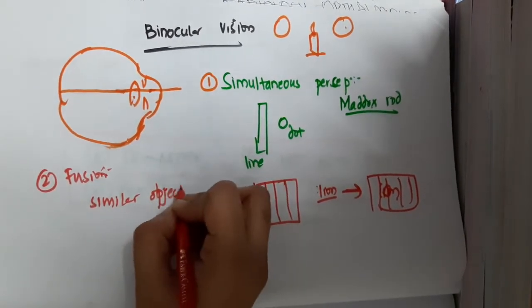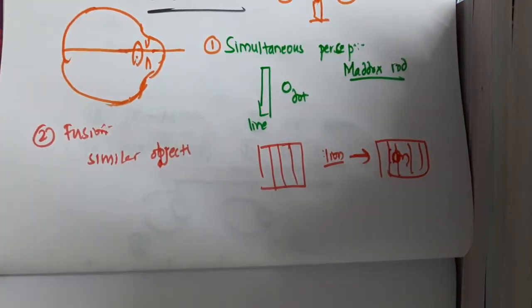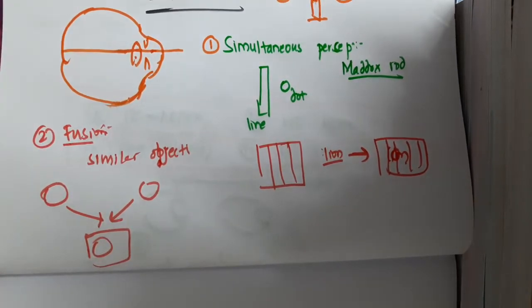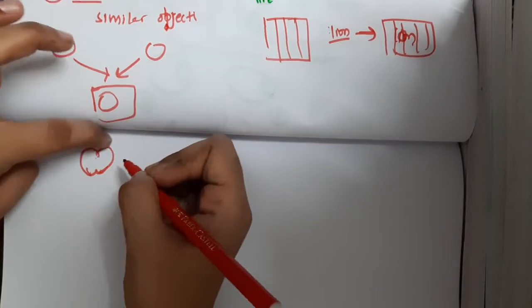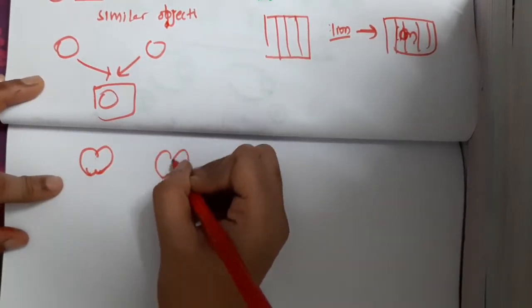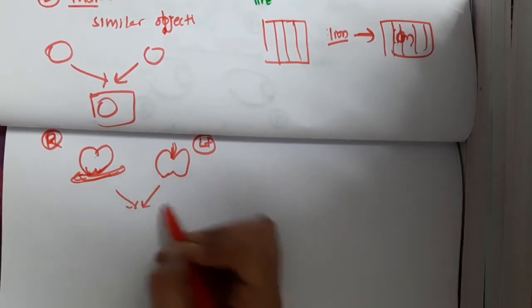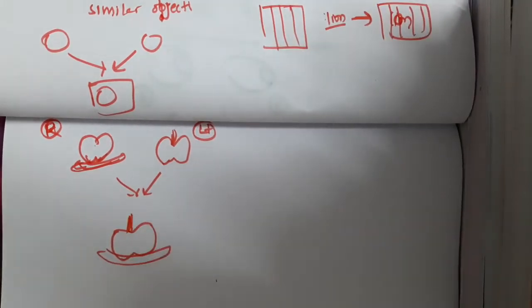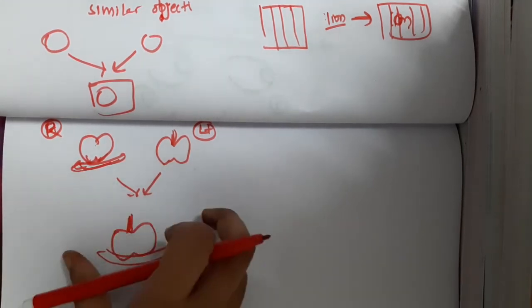For fusion, there should be similar objects. The two eyes see similar objects, overlap them, and produce one image — that is fusion. For example, if the apple seen by the right eye has no stem but has a plate, and the apple from the left eye has a stem, when combined in fusion you will see the apple with a plate and stem. So fusion is where two images with some missing parts are combined to complete one object.